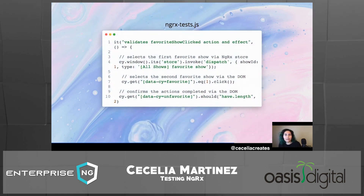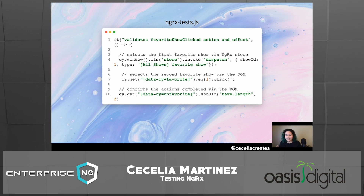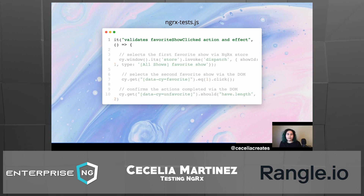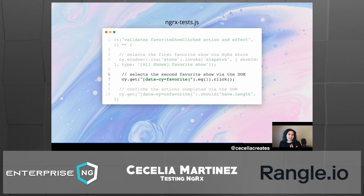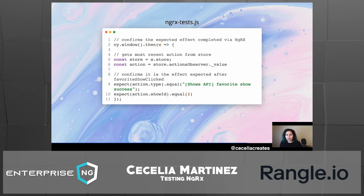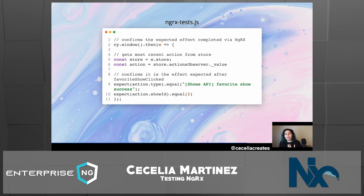So how do we test that? I'll break this down since it's a longer test. The first thing we do is set up our test — we're going to select two shows as favorites, two different ways. The first way selects a favorite show via the NGRX store, which I'll explain in a moment. The second selects a show via the DOM by clicking on an item. If we were doing normal end-to-end tests, we'd validate that we selected two favorites and should have a length of two for our unfavorites. But we want to go further and confirm that the effect occurred as expected — not just in the DOM, but in our actual state management store.